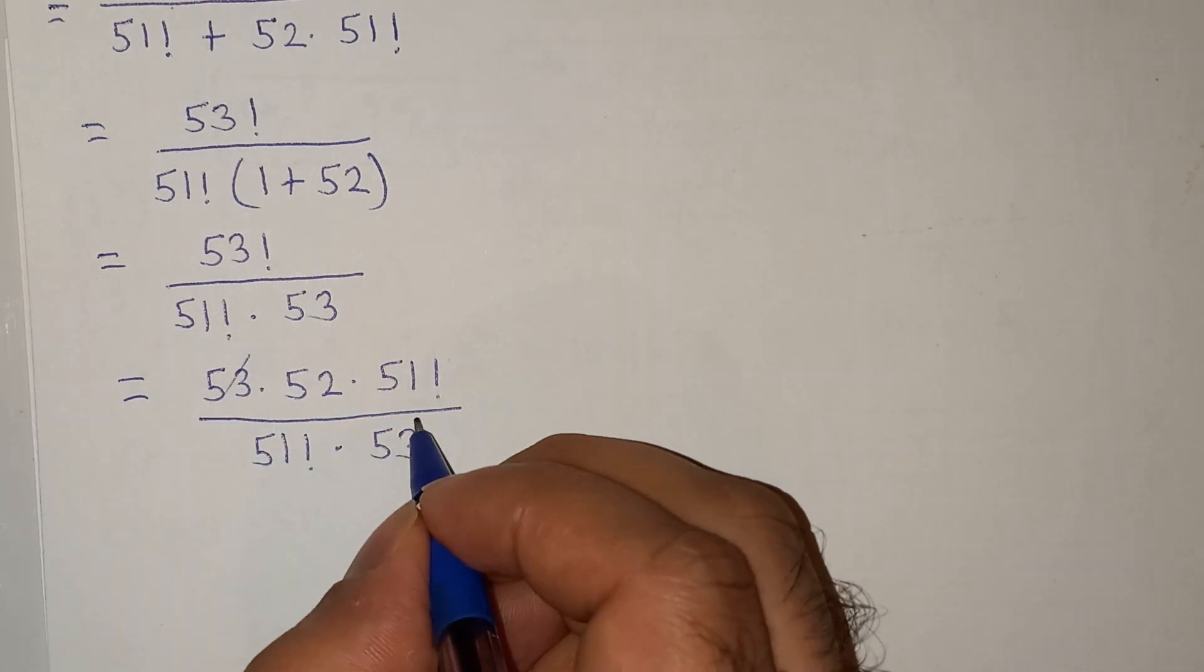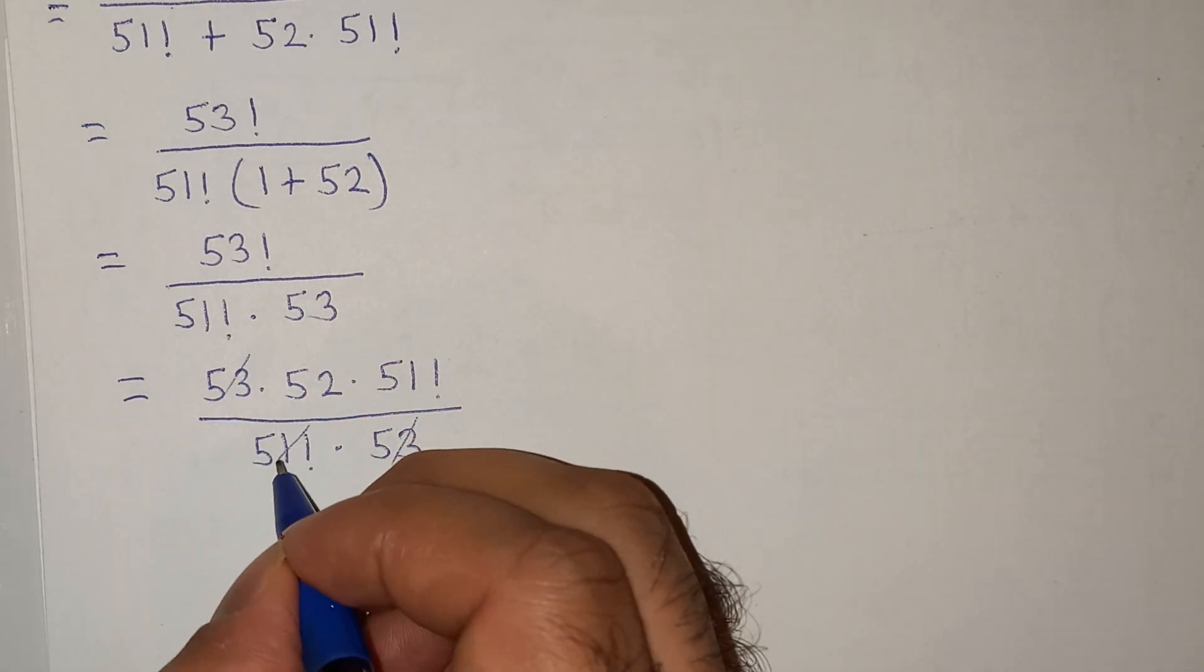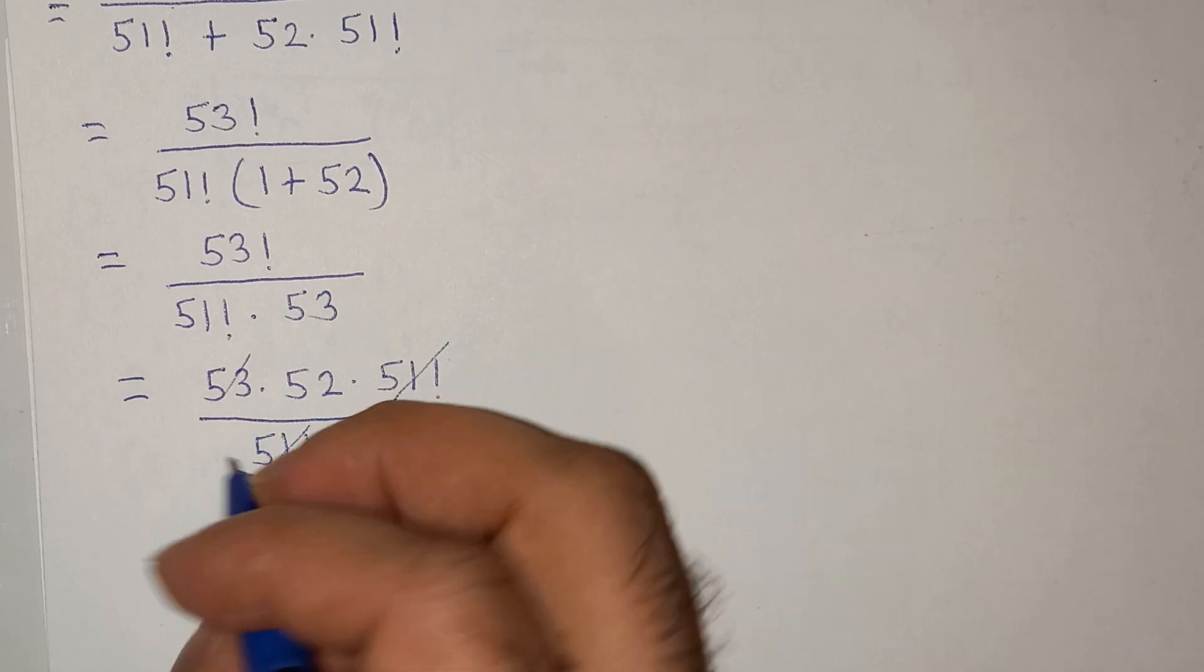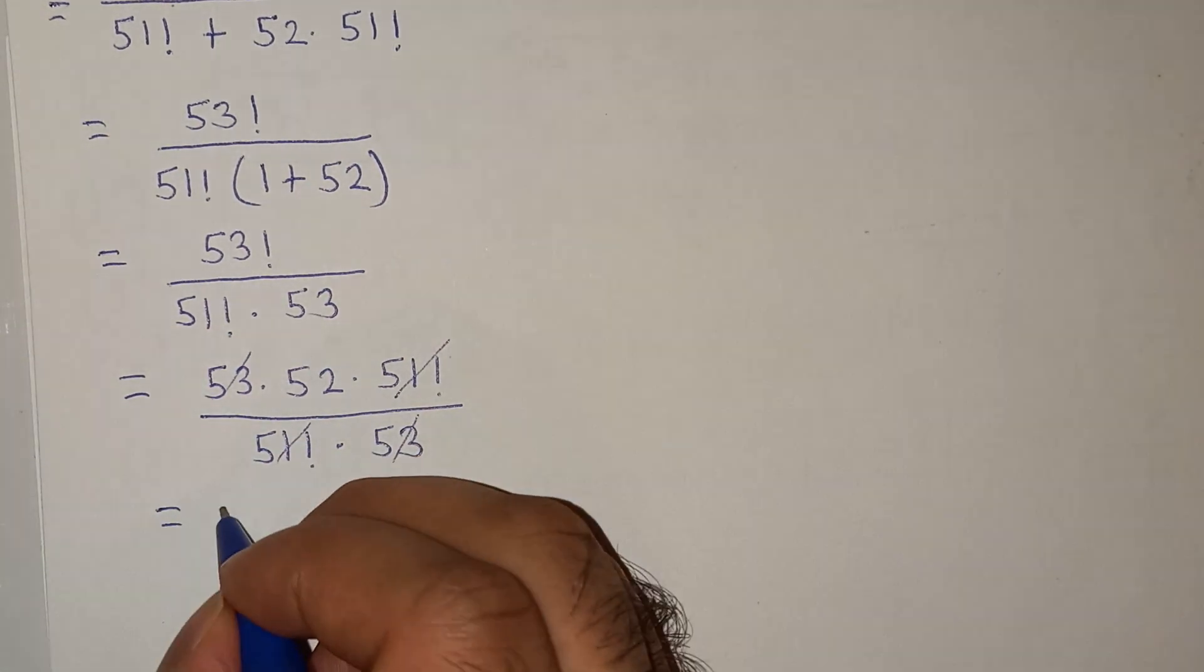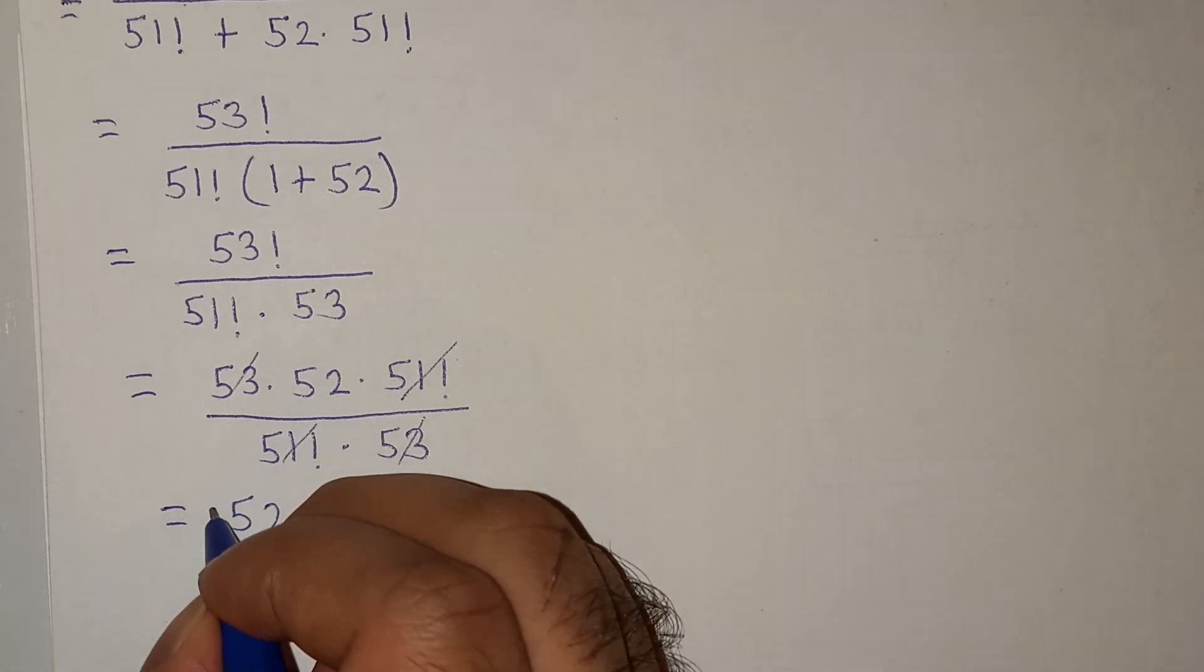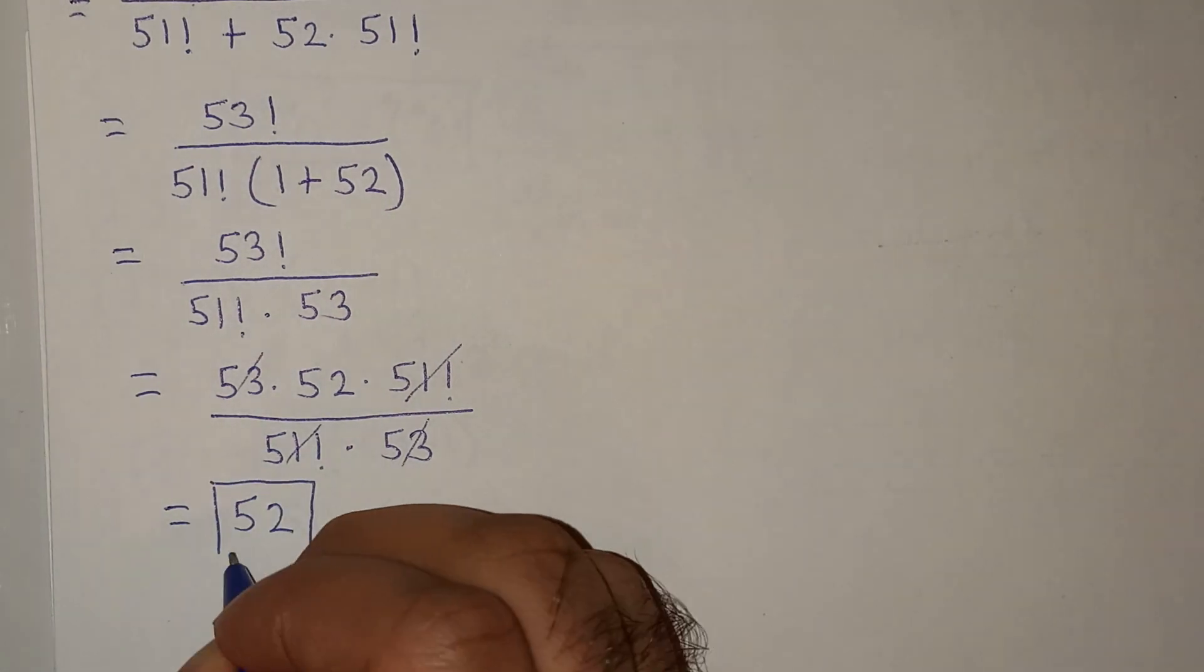Now this 53 will cancel and this 51 factorial and 51 factorial will cancel. So we are left with 52. So this is the answer.